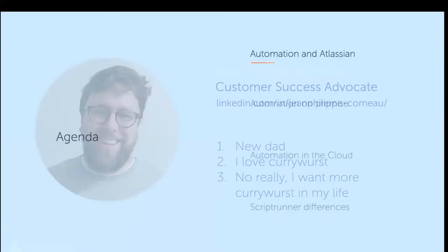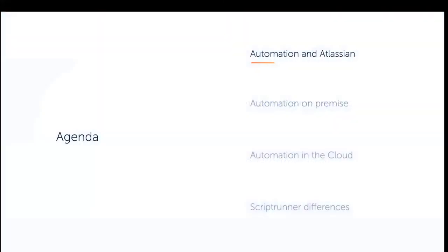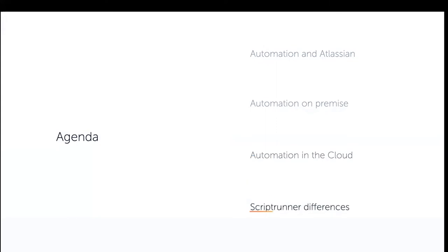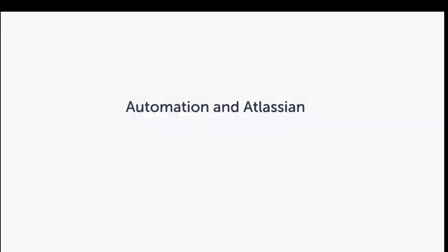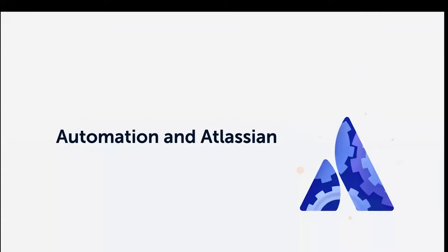Let's look at the agenda. Today we're going to do a quick intro of automation in Atlassian, look at what automation on-premise means, what automation in the cloud means, and then we'll look more specifically at the ScriptRunner differences.